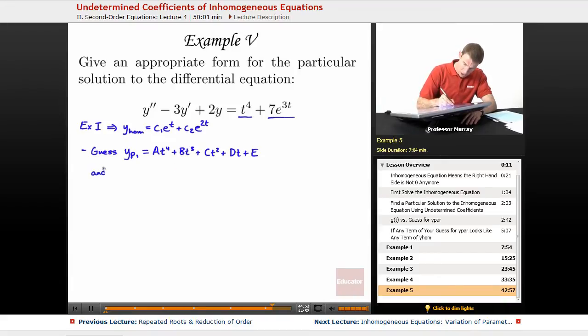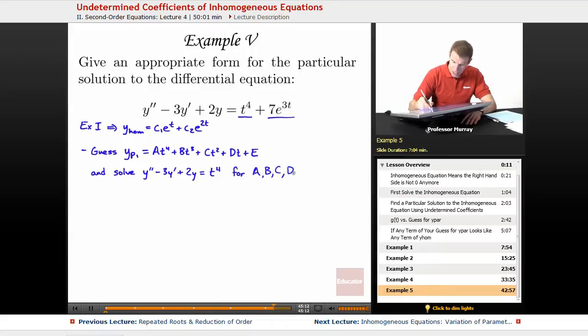And we would take that guess and we would solve y'' - 3y' + 2y = t^4. We would solve that for the undetermined coefficients A, B, C, D, and E.